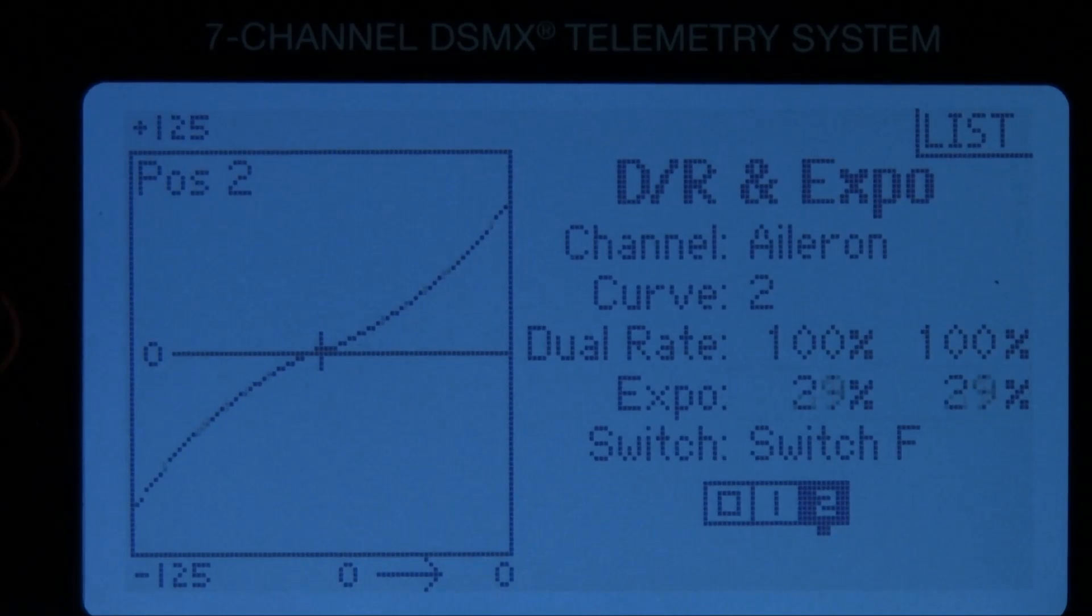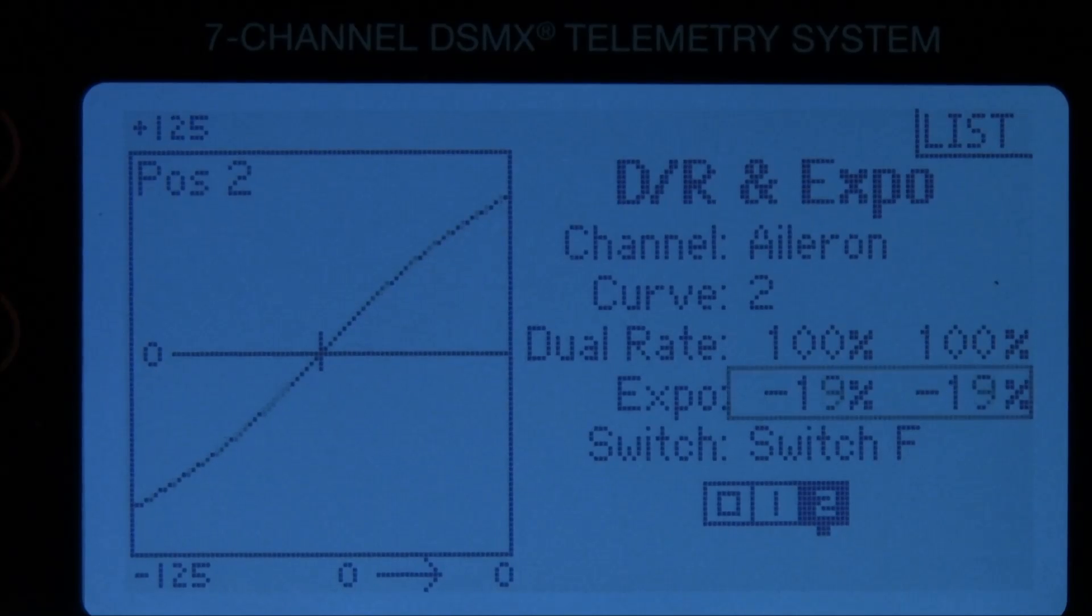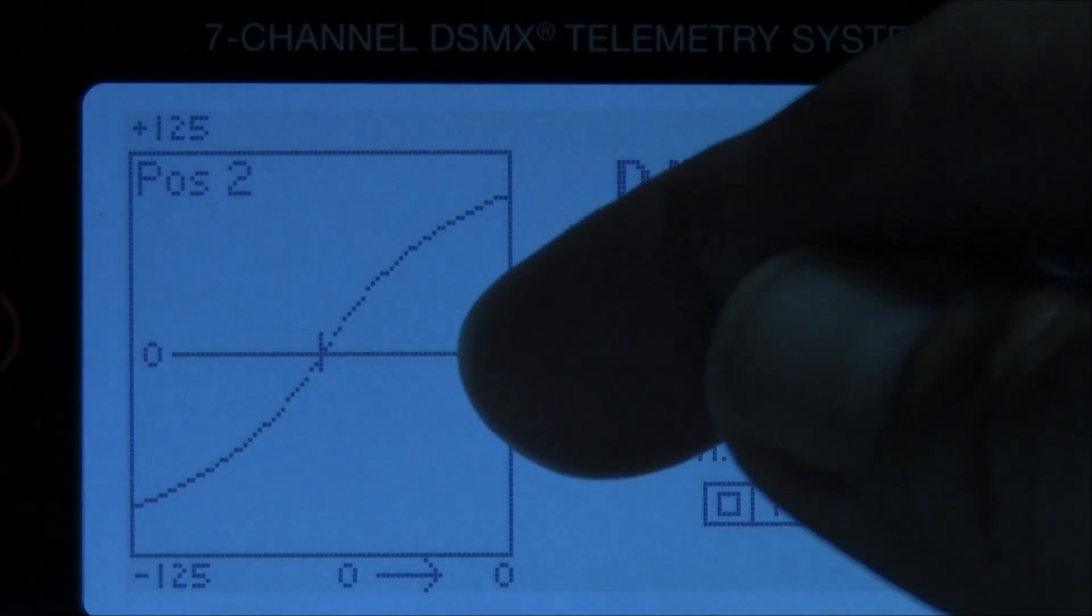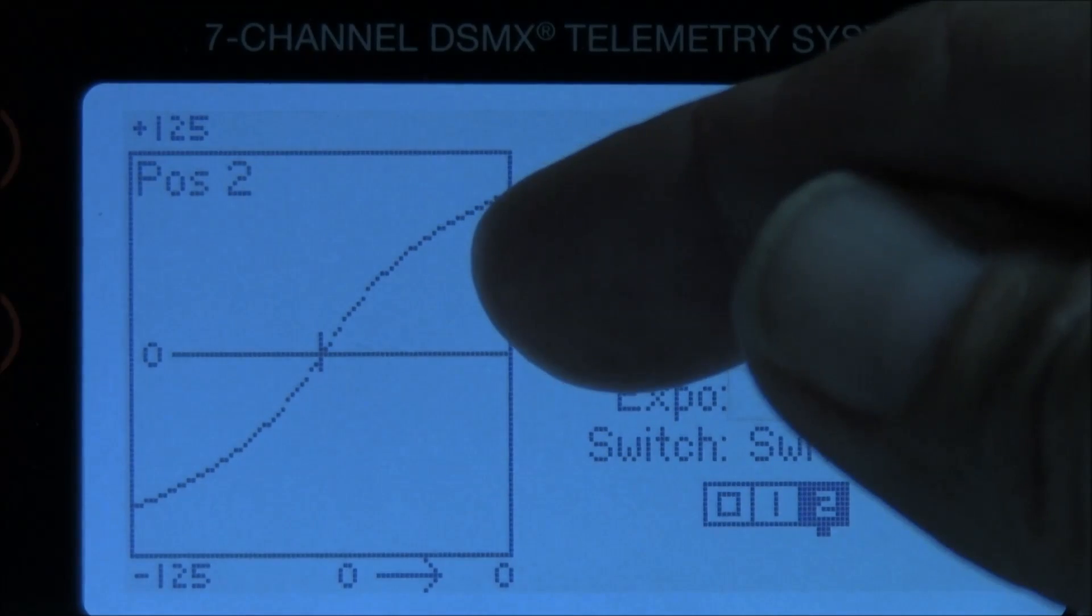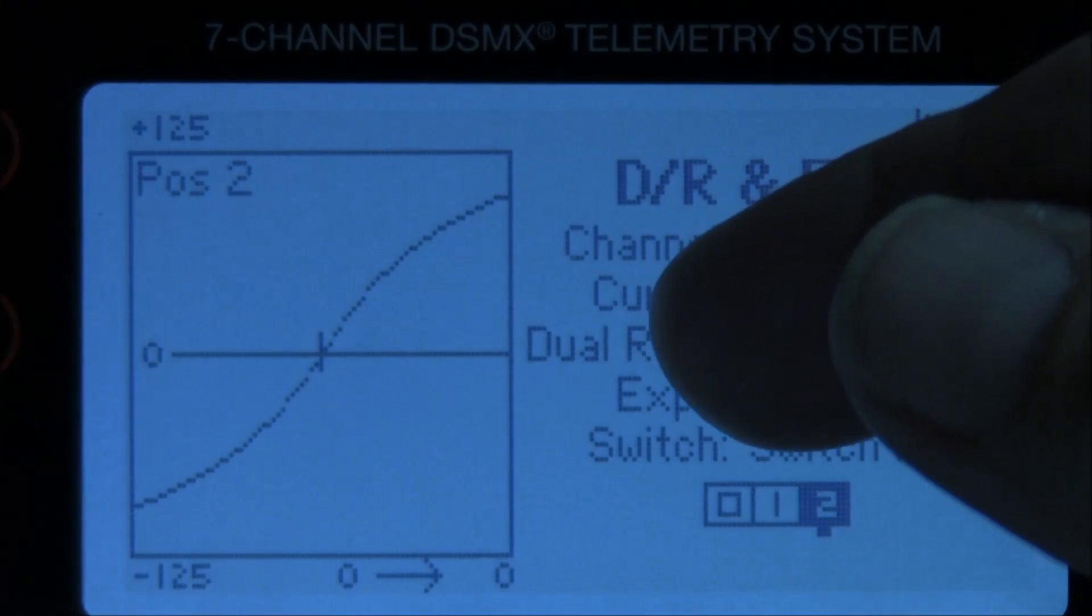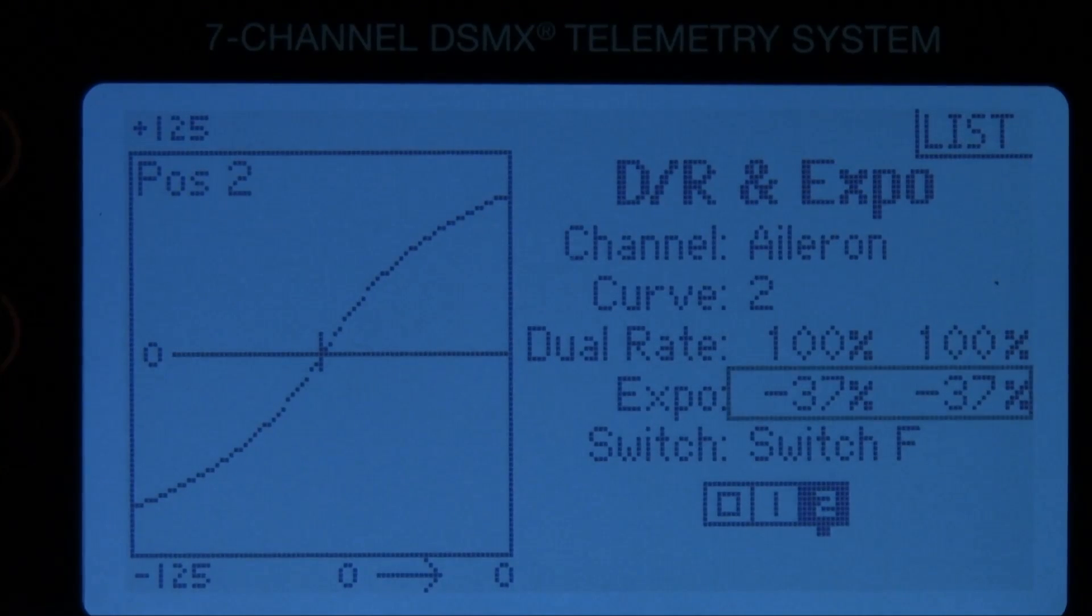You can actually reverse that and make it more sensitive if you wish by using a negative number. Let's show you how to do that. Just scroll back to the negative number. And now we're just about 37 percent. But you notice how the curve goes upward making it more sensitive around center rather than less sensitive. But that's your choice if you want to do it. Right now let's go right back to making it less sensitive with a sensitivity percentage of 30 percent.